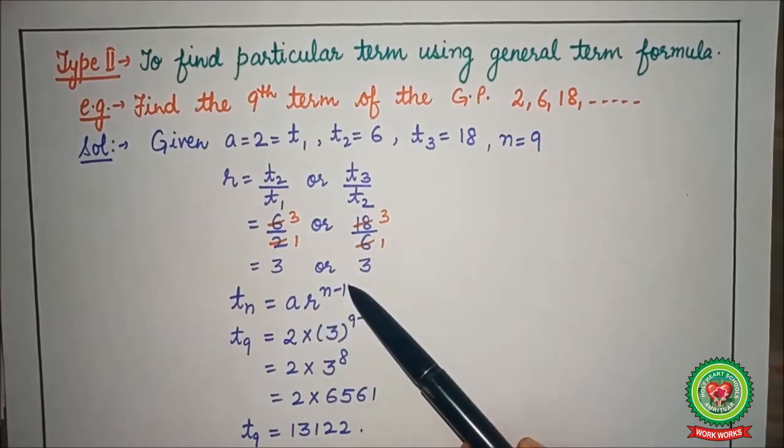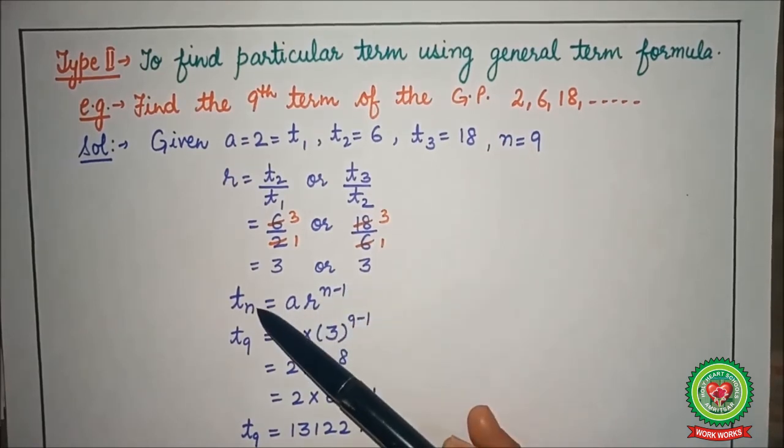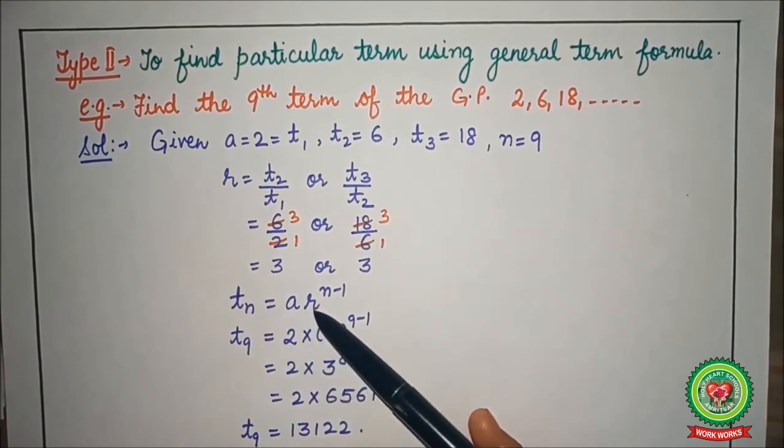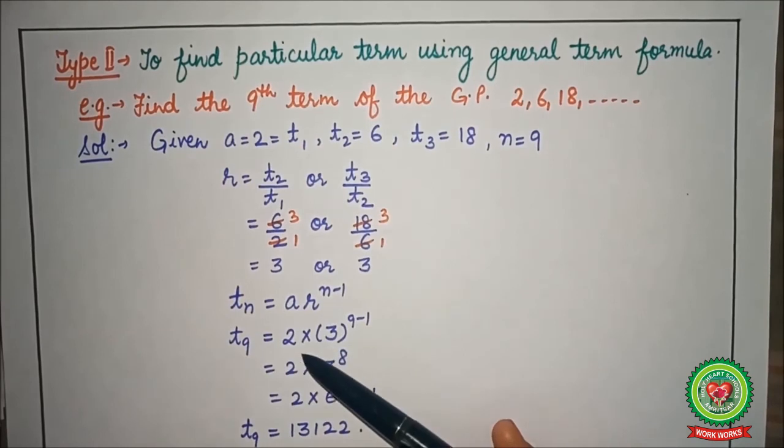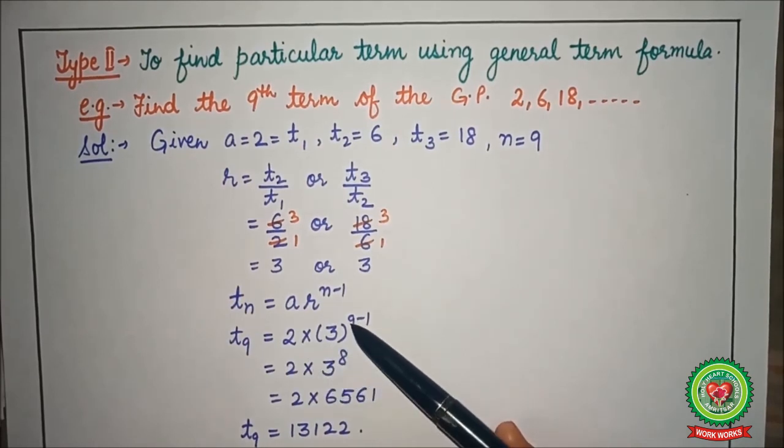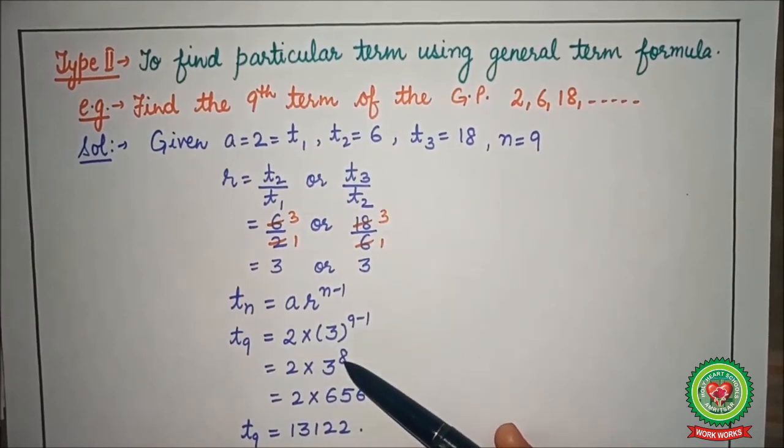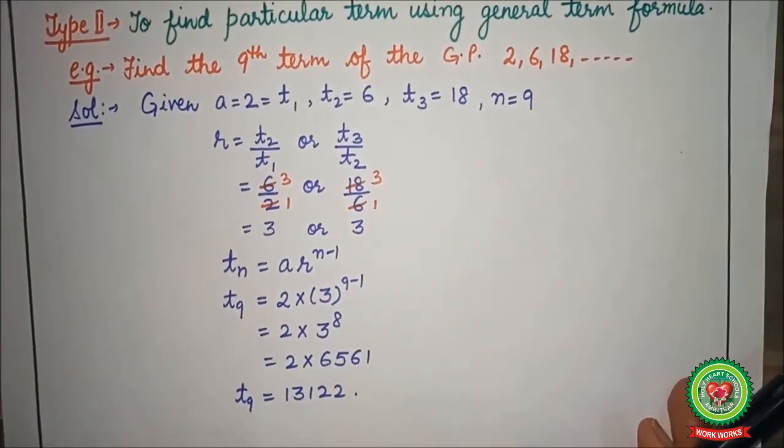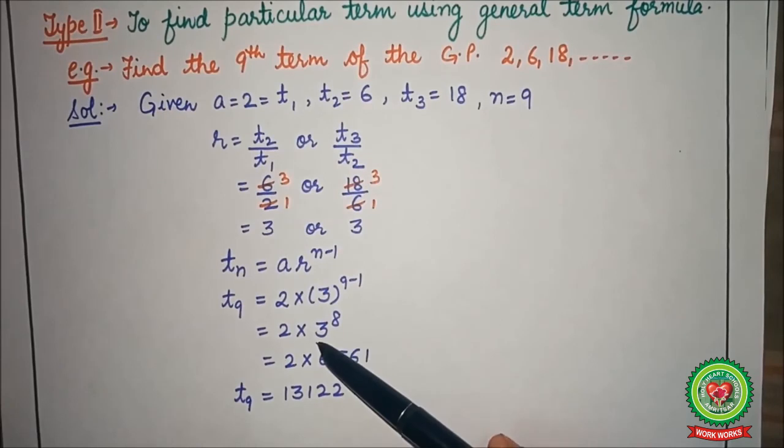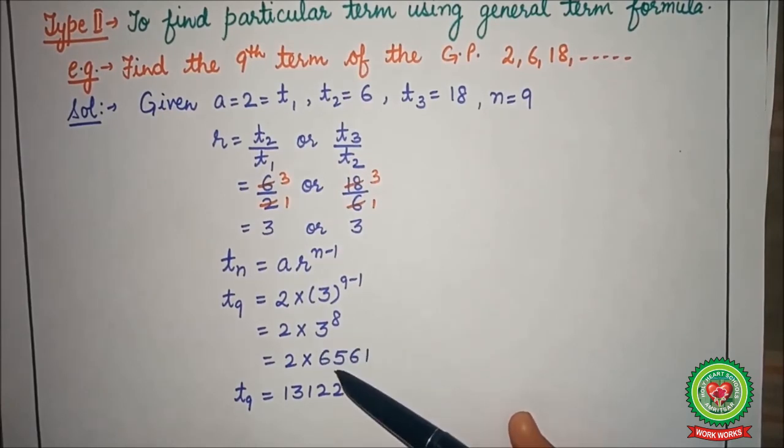tn is equal to a times r raised to power n minus 1. Put the value of n, a and r. We get t9 is 2 multiplied by 3 raised to power 9 minus 1, that is equal to 8. Now on solving 3 raised to power 8, that is on multiplying 3 to the 8 times, we get 6561.